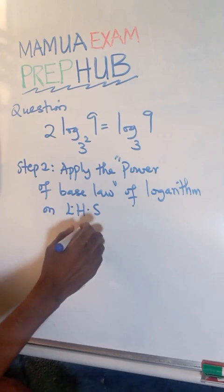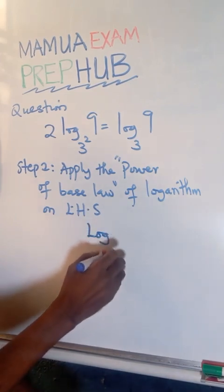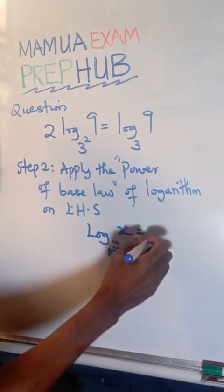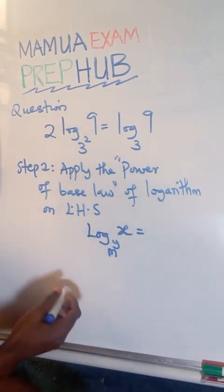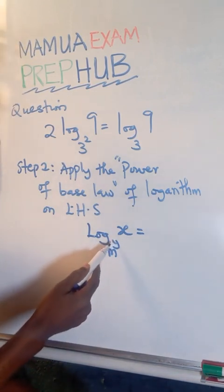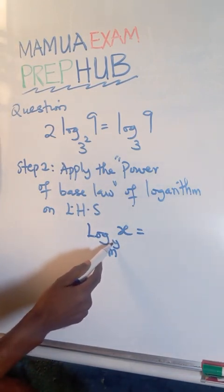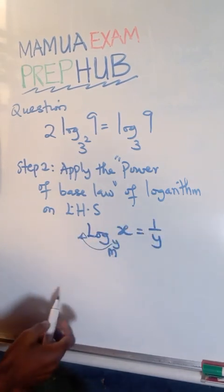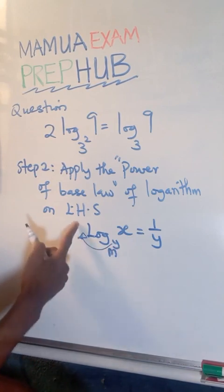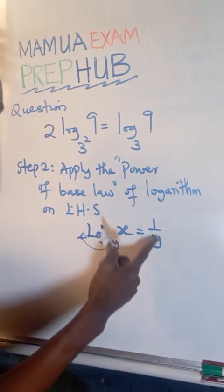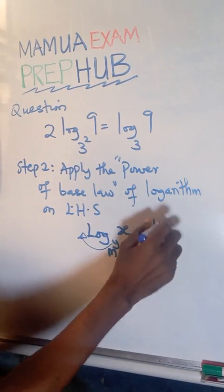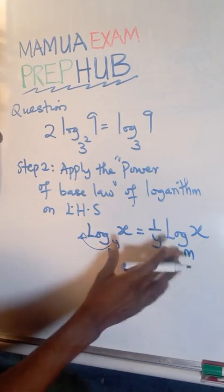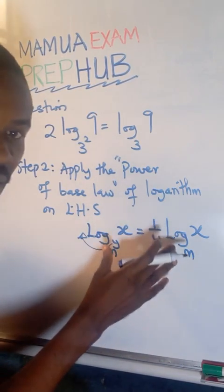Base law, for instance, if I have log base x to the power y of n equals to, of course, if I have this, since I have a power here, you can bring this power here. But you bring the reciprocal. So n raised to the power y can come here as a coefficient, but it becomes the reciprocal. So we now have 1 over y log base x of n. So this is what we call the power of base law.